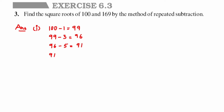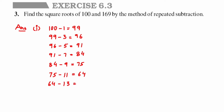91 minus 7 gives us 84. Next odd number is 9, so 84 minus 9 gives us 75. Then 75 minus 11 is 64. Next, 64 minus 13 gives us 51. Now 51 minus 15 gives us 36. So 36 minus 17 is 19.